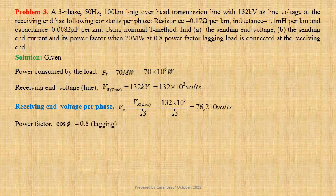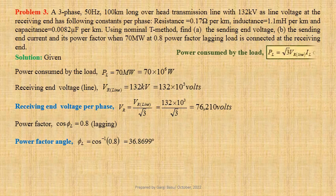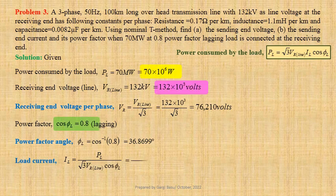Let us now calculate the power factor angle. φL equals cos⁻¹(0.8), that is equal to 36.8699 degrees. The expression for power consumed by the load is PL = √3 × VL × IL × cos φL. Therefore, load current IL equals PL divided by (√3 × VL × cos φL). Using values, we get 70 × 10⁶ divided by (√3 × 132 × 10³ × 0.8), that is equal to 382.7 amperes.